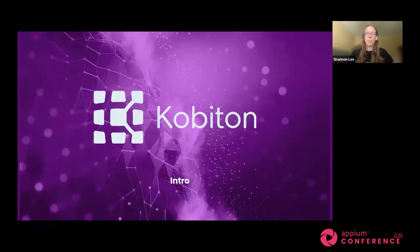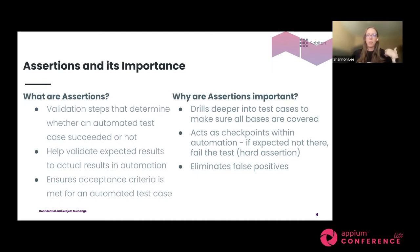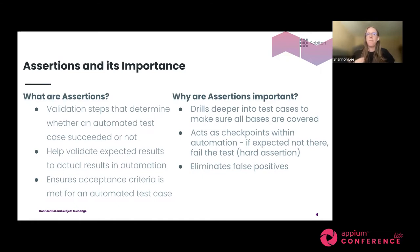So, quick intro — this is going to be heavily around assertions. For those who may not be familiar, assertions are validation steps that determine whether an automated test has succeeded or not. They validate expected results against actual results in automation, and really help ensure you're hitting the acceptance criteria within your test case. From a programmatic viewpoint, we implement assertions to compare what's actually happening against what's expected — if it matches, the test passes; if not, we fail it and revisit.